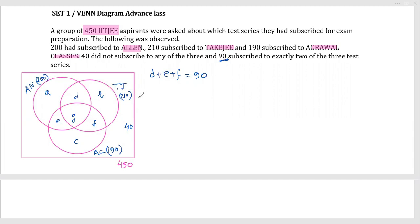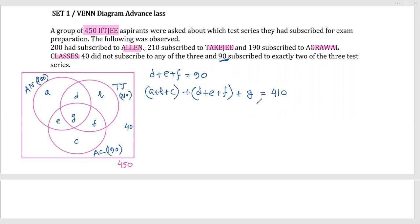The union of these three test series can be written as a plus b plus c (those subscribed to exactly one series) plus d plus e plus f (those subscribed to exactly two) plus g (those subscribed to all three). This entire part plus 40 equals 450, so the union equals 410. Since d plus e plus f equals 90, we get a plus b plus c plus g equals 320. This is equation one.